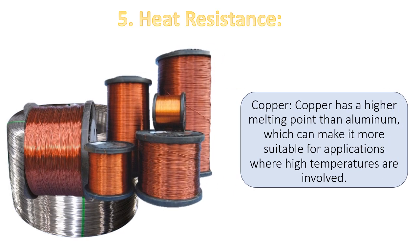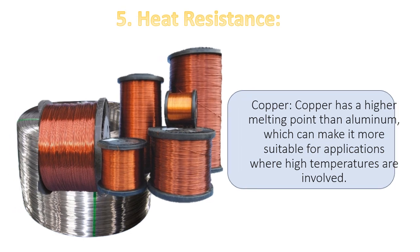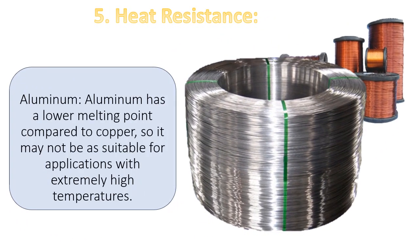5. Heat resistance. Copper has a higher melting point than aluminum, which can make it more suitable for applications where high temperatures are involved. Aluminum has a lower melting point compared to copper, so it may not be as suitable for applications with extremely high temperatures.